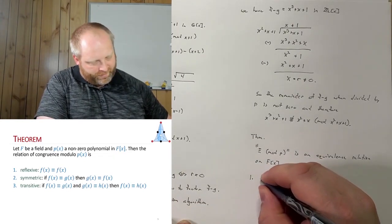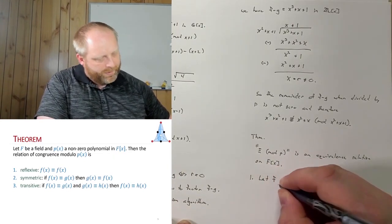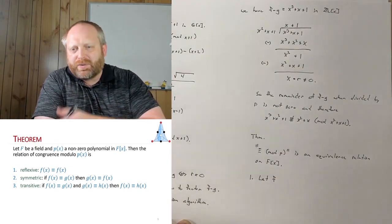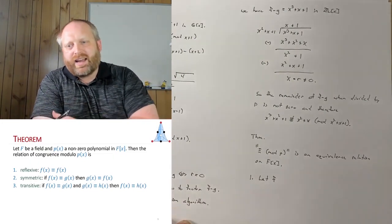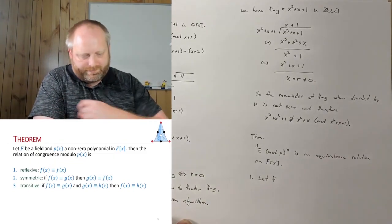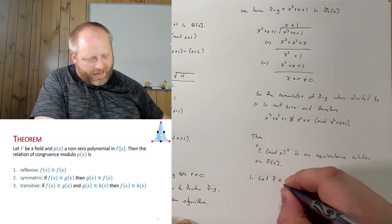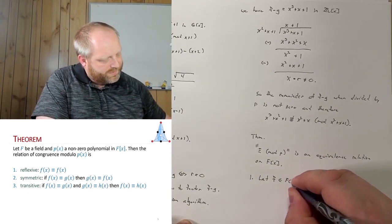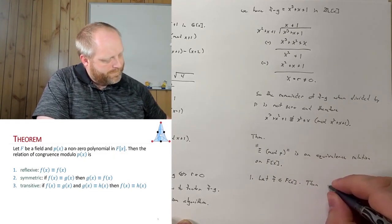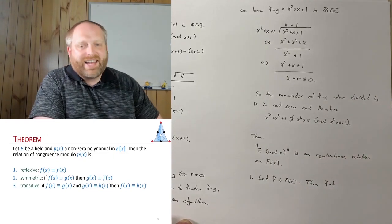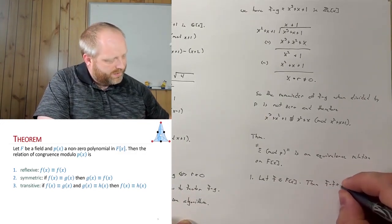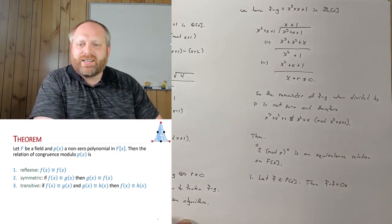So reflexive, let's start off with this one. So let f, and here I'm just going to leave out the x's, because obviously we know what we're dealing with. This is a polynomial with respect to x. So f is an element of F[x]. Then if we take f and subtract f, we're going to cancel everything out.